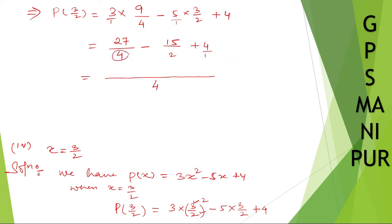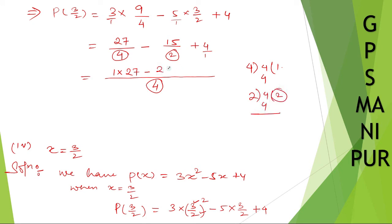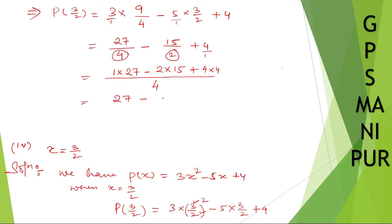Using LCM 4: 4 divided by 4 times 27 is 27; 4 divided by 2 times 15 is 30; 4 divided by 1 times 4 is 16. So we get (27 minus 30 plus 16) divided by 4. That is (minus 3 plus 16) divided by 4, which equals 13/4. The answer is 13/4.